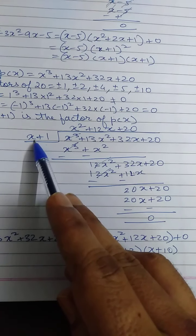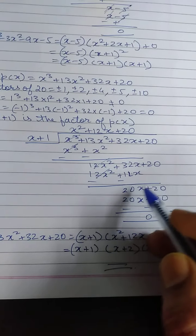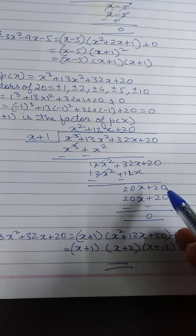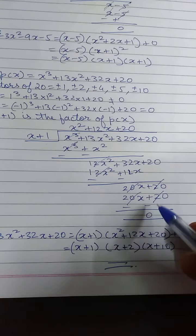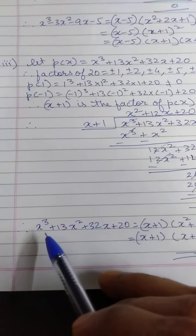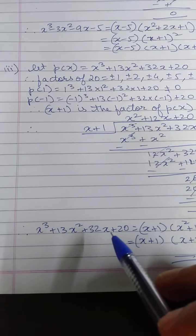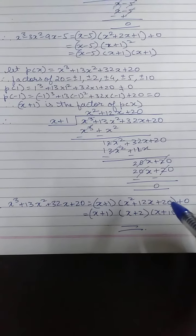What should I multiply in x to get 20x? So I should multiply by 20. 20 into x will give you 20x. 20 into 1 is 20. Now you change the sign and all the terms get cancelled. You get 0 as the remainder. Similarly, x cube plus 13x square plus 32x plus 20, your dividend is equal to divisor into quotient plus remainder.